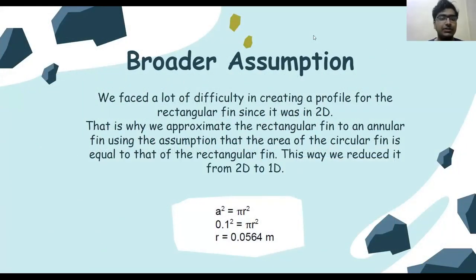For the assumptions we have taken, we faced a lot of trouble in making the temperature profile for the rectangular fin as it was a 2D figure. So to simplify it, we approximate the rectangular fin to an annular fin using the assumption that the area of a rectangular fin is equal to that of a circular fin. This way we simplify the 2D fin to a 1D figure. So here we see that in this calculation, R for the circular fin comes out to be 0.0564 meters.